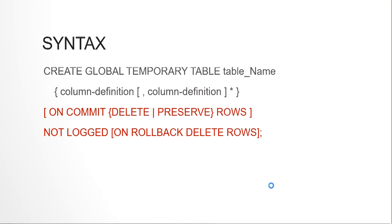Now let's look at the syntax of a global temporary table. It is mostly the same as a CREATE TABLE statement: CREATE GLOBAL TEMPORARY TABLE followed by the table name, then column definitions with column name and data type. There is one new clause: ON COMMIT, where you specify what should happen with the data when a commit happens for that session.